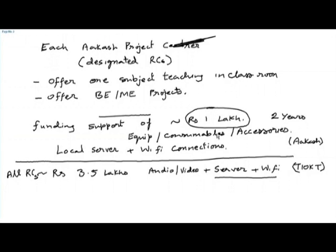For example, when final year students do a project requiring a few additional components — say 5,000 or 6,000 rupees — the Aakash coordinator and respective guides and students should be able to use this funding. In short, we will use the rupees one lakh per Aakash project centre very selectively to provide absolutely required funding for Aakash R&D related activities.